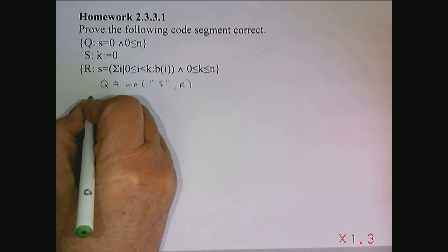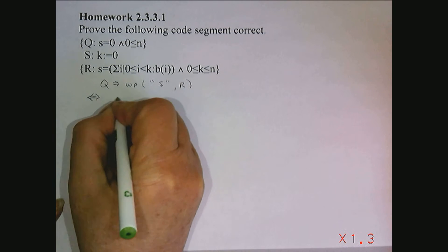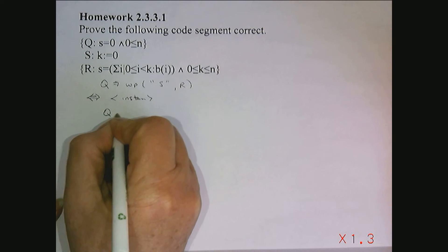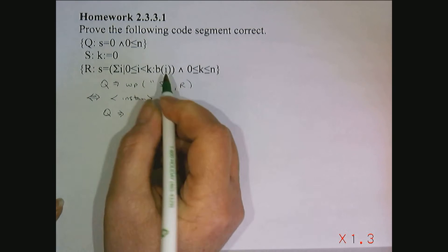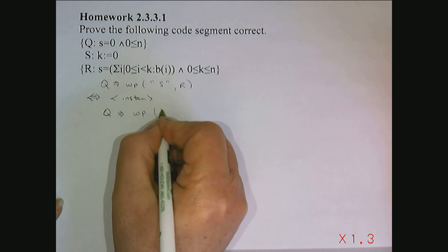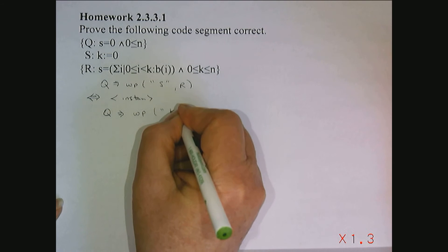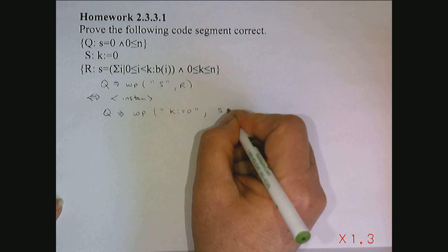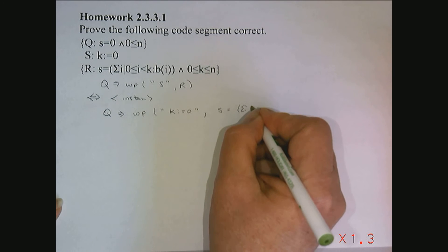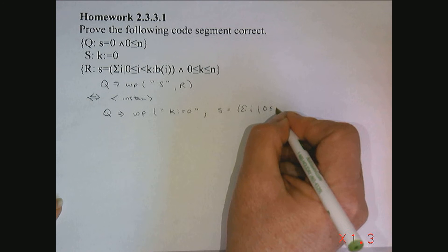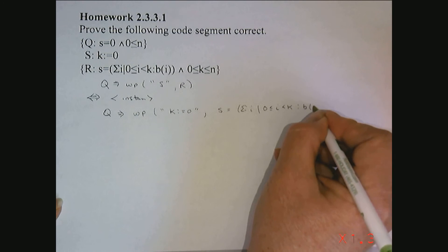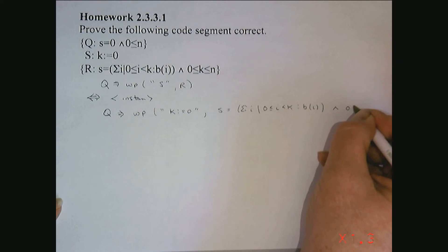So by instantiation, this means that we need to show Q implies the weakest precondition. The command is K becomes 0, and the postcondition is S is equal to the sum over all I, 0 less than or equal to I, less than K of B(I), and 0 less than or equal to K, less than or equal to N.